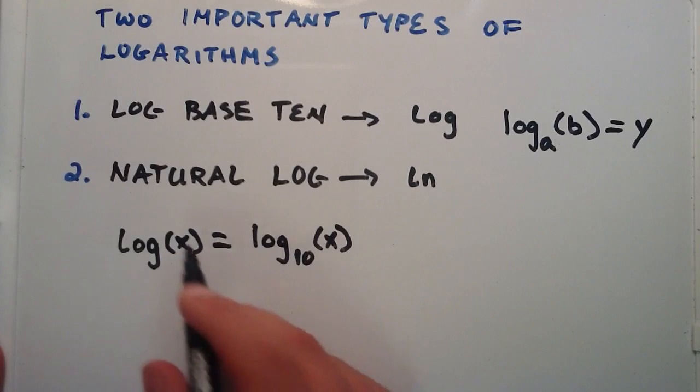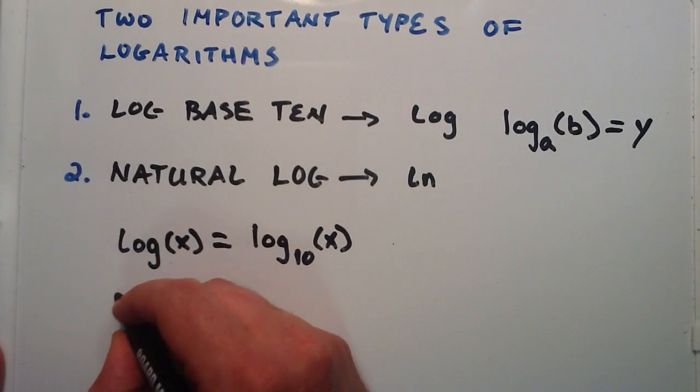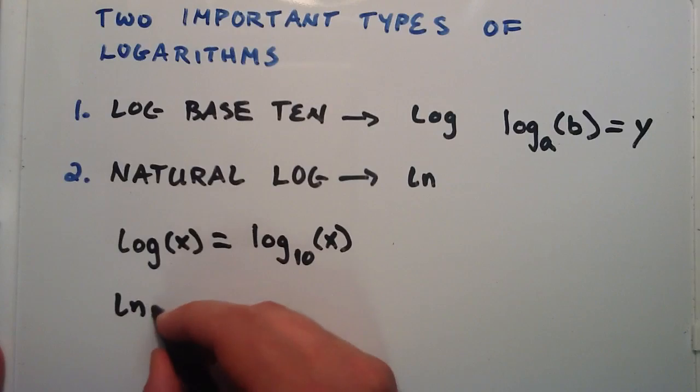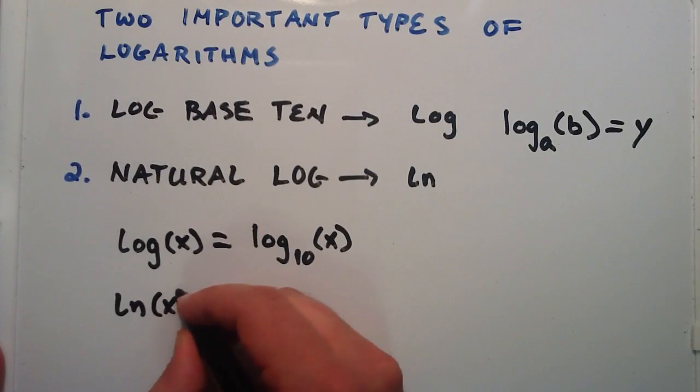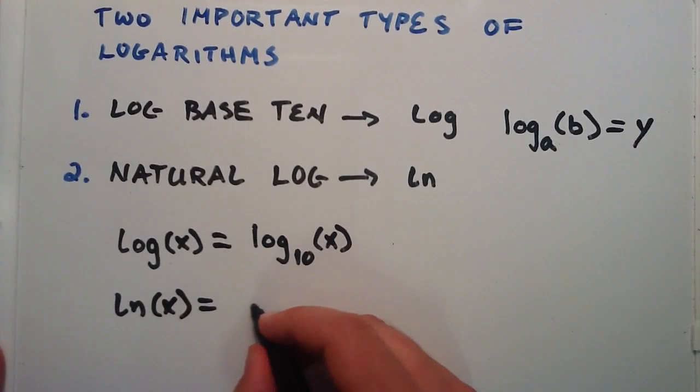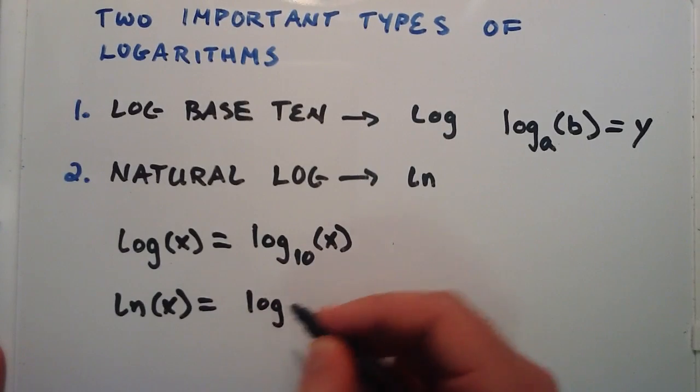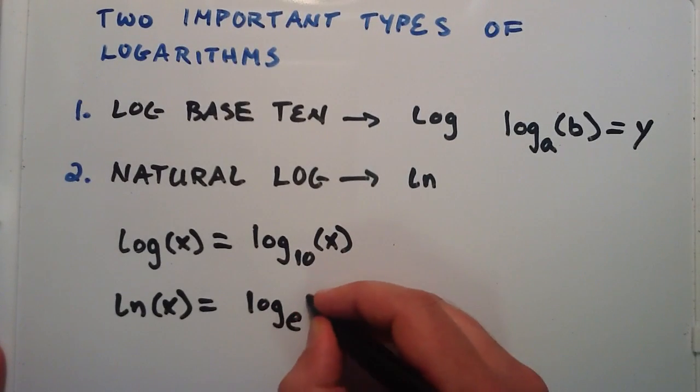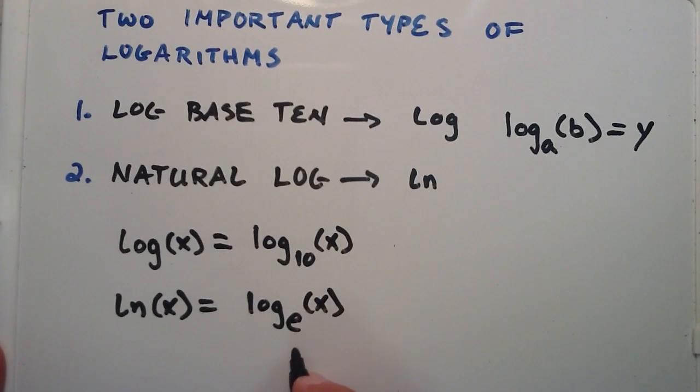The second one is the natural logarithm, and it's referred to as ln. So if we have the natural log of x, that's really the same thing as log base e of x. So what is e?